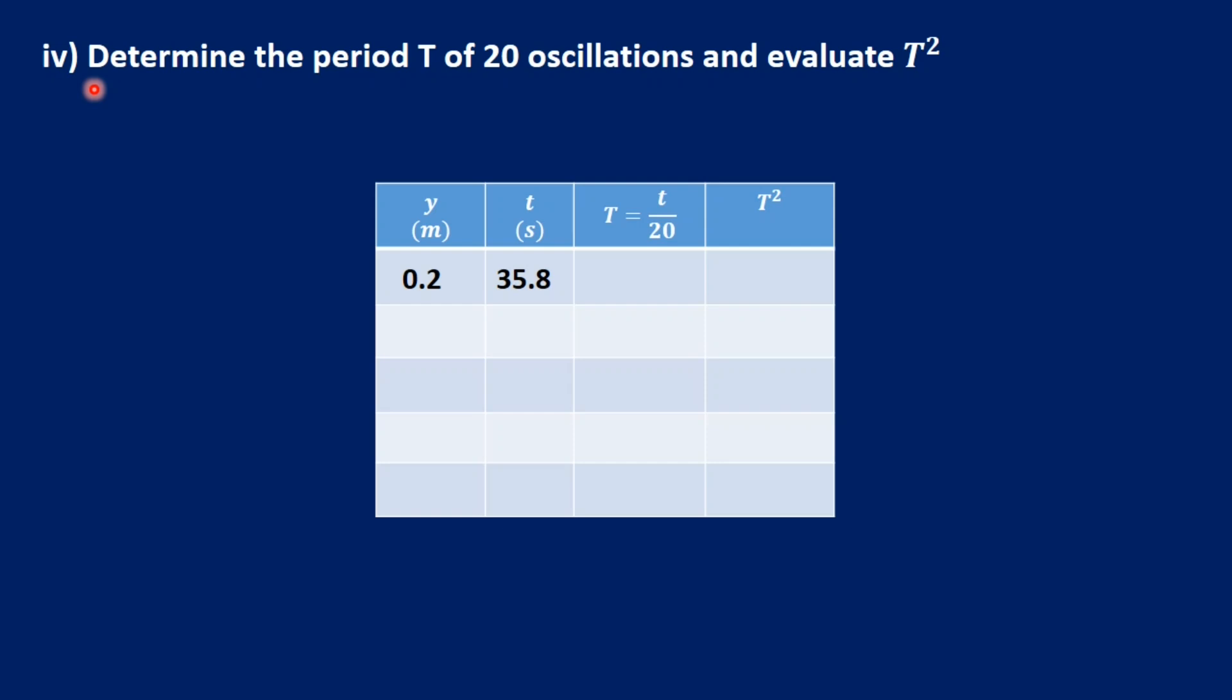I've been determined the period T of 20 oscillations and evaluate T squared. T is the time for 20 complete oscillations, and the period is the time for one complete oscillation. So we divide this time by 20 to get the period, and we are to evaluate T squared. So we square 1.79 to get 3.20.